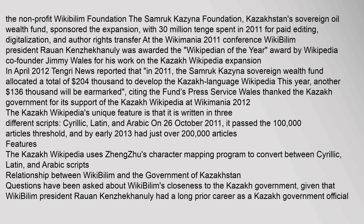The Kazakh Wikipedia's unique feature is that it is written in three different scripts: Cyrillic, Latin, and Arabic. On 26 October 2011, it passed the 100,000 articles threshold, and by early 2013 had just over 200,000 articles.